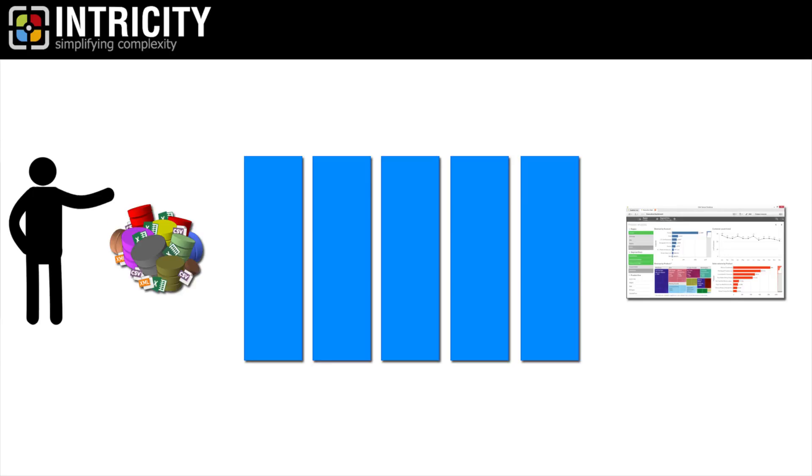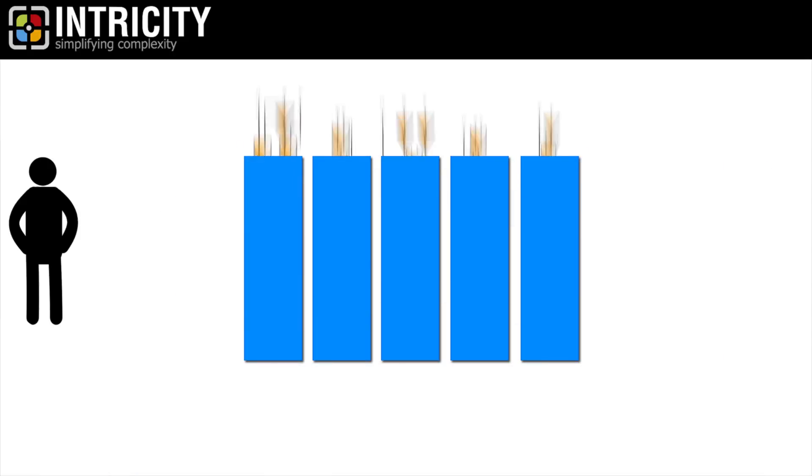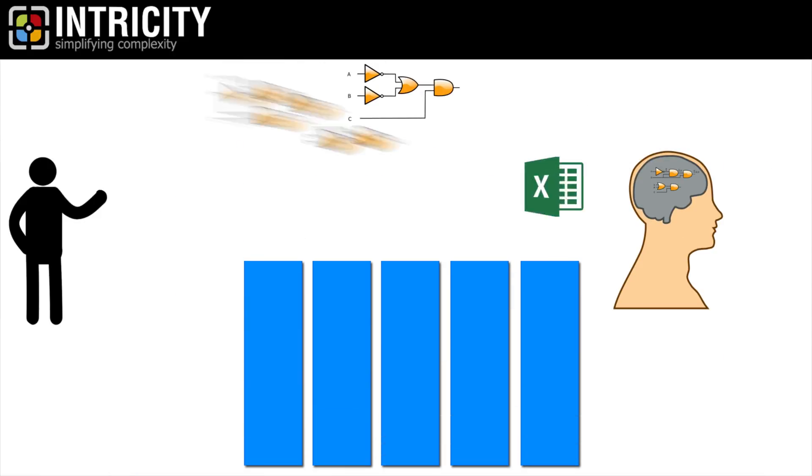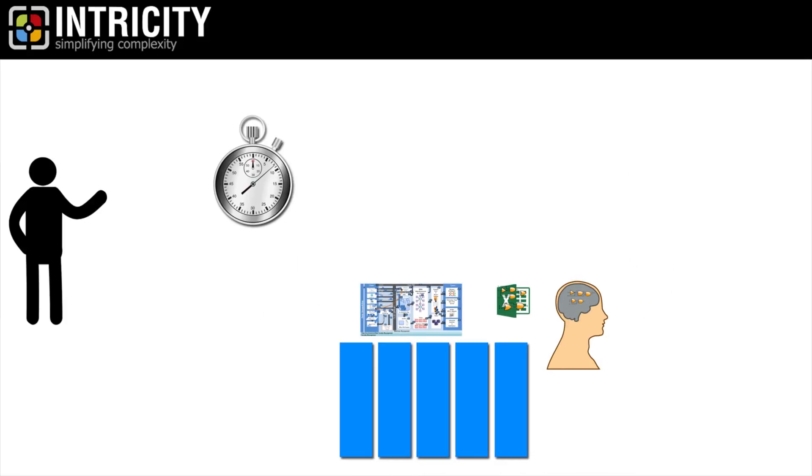At each step in your data to information assembly line, there is logic which has to be executed to cleanse and conform the data so that it can be used by the organization. There is no getting around this. That logic must live somewhere, whether it's in people's heads or Excel spreadsheets or an automated data integration process. When and where that logic gets executed is critical.